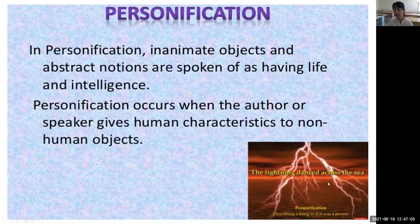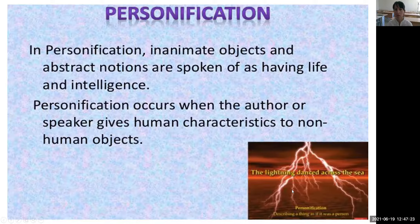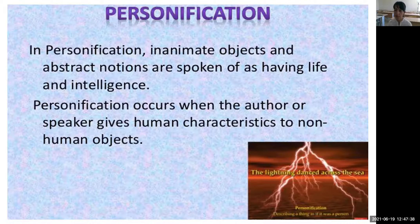Look at this example. We see the lightning. This is mentioned: 'The lightning dances across the sea.' People — or maybe animals — can dance, but not lightning, because lightning is a non-human object. In real life it cannot dance. But in personification, in transferring meaning, we can say 'the lightning danced across the sea.'